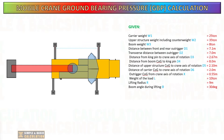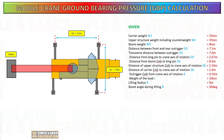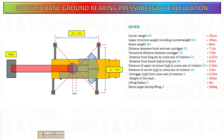A sample spreadsheet has been created specifically designed for calculating the GBP of a mobile crane. By inputting all the required data, this spreadsheet will automatically perform the calculations. At the moment, I will show the process of performing manual calculations.